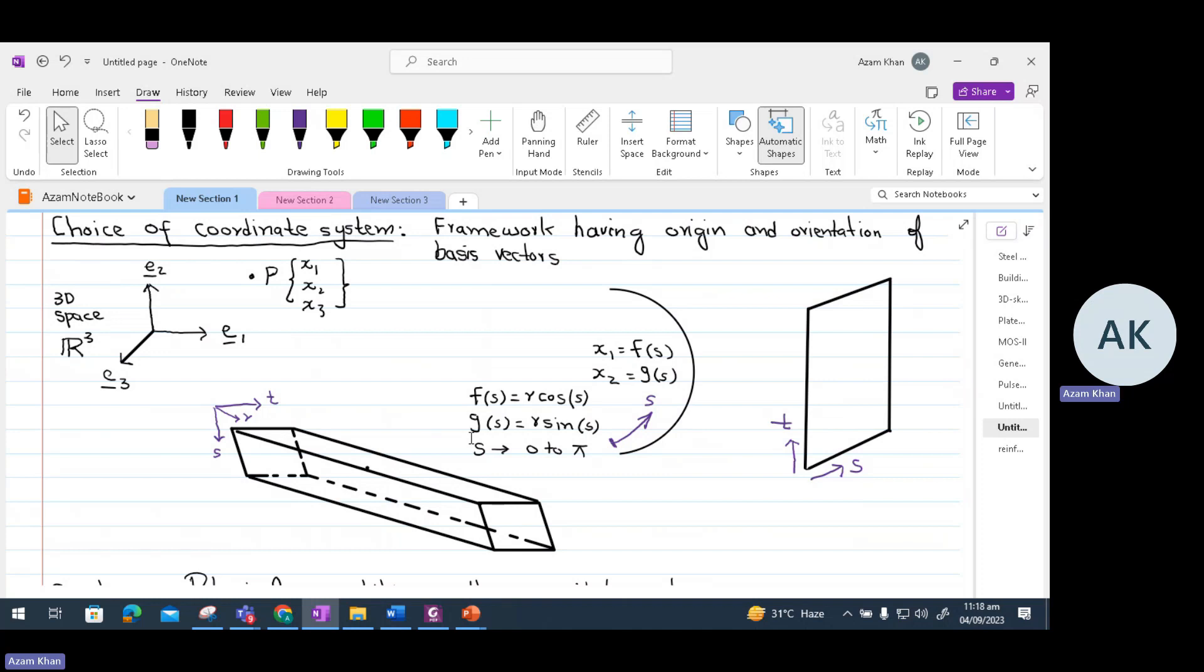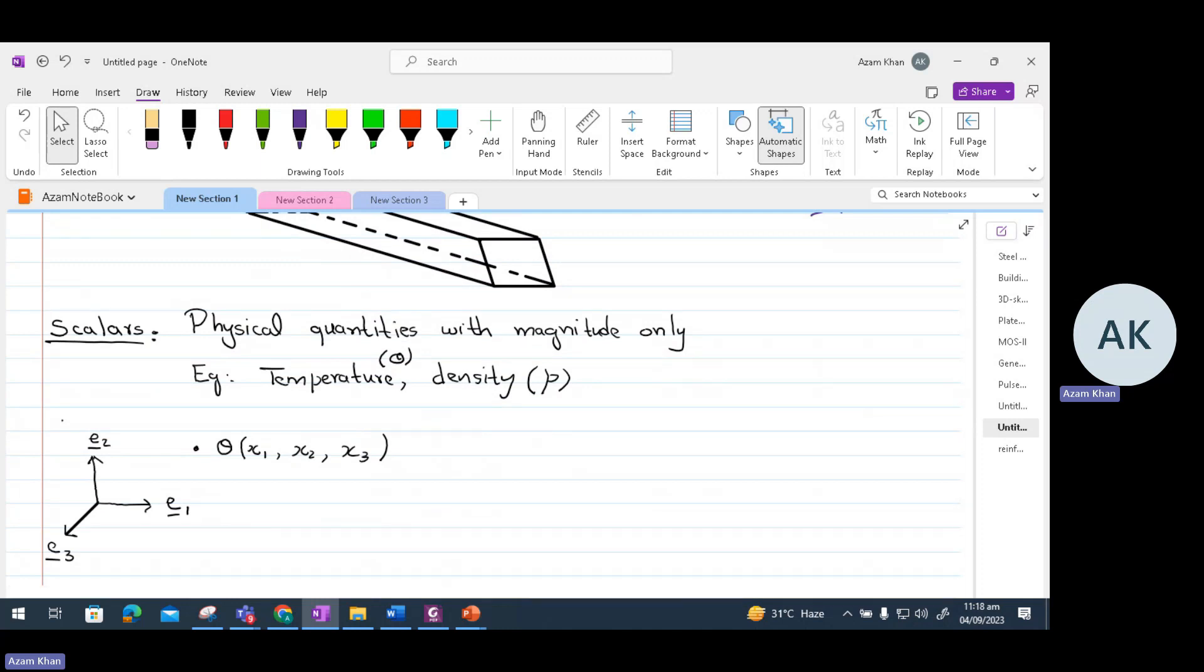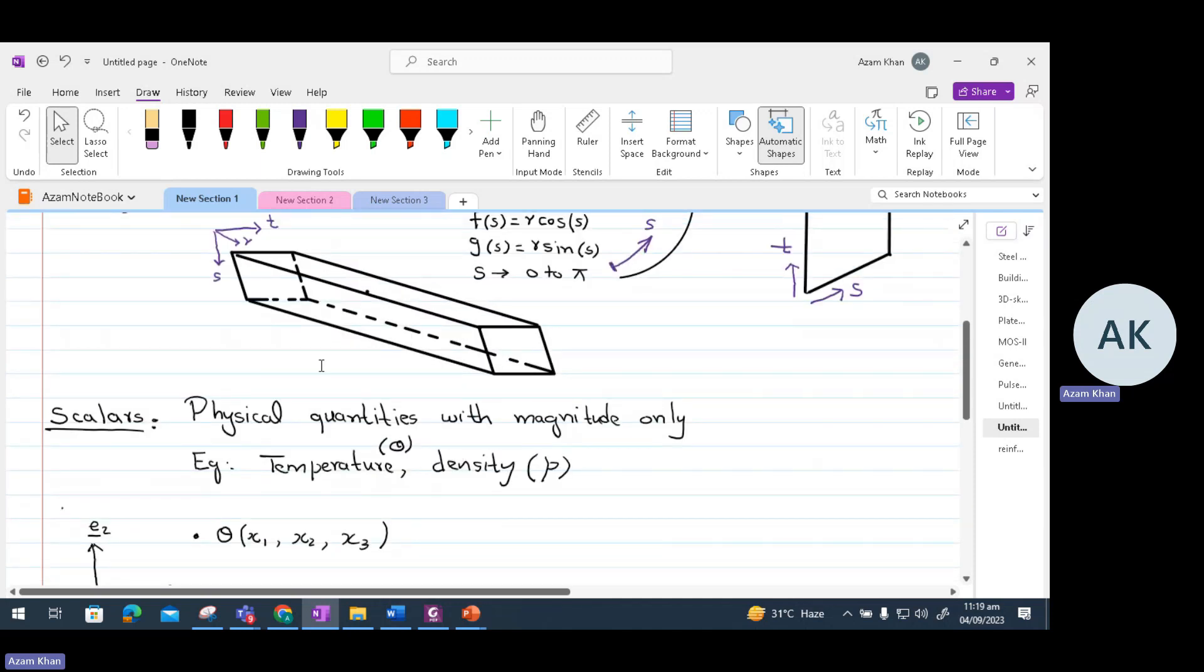Now, let us move on to scalars. A scalar is a physical quantity with magnitude only, such as temperature and density. If we have a Cartesian coordinate system, E1, E2, and E3, and imagine we have got a beam which is subject to some fire, every point in the beam can be defined as theta of X1, X2, X3. Theta is the temperature at every point in the beam. So temperature is a scalar quantity which requires only magnitude. Temperature has got no direction.